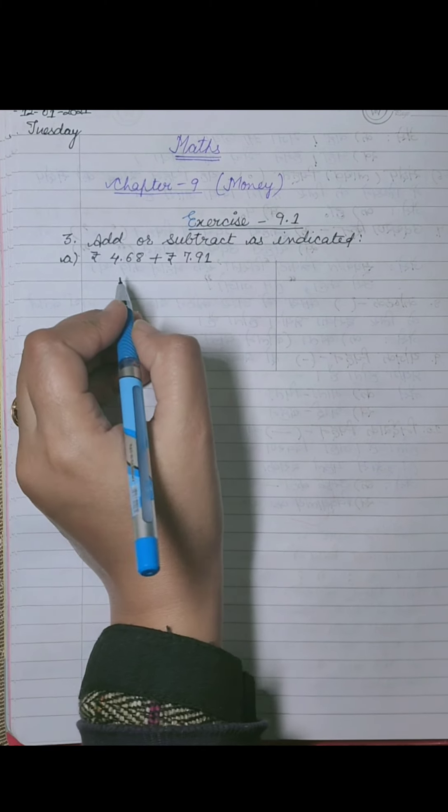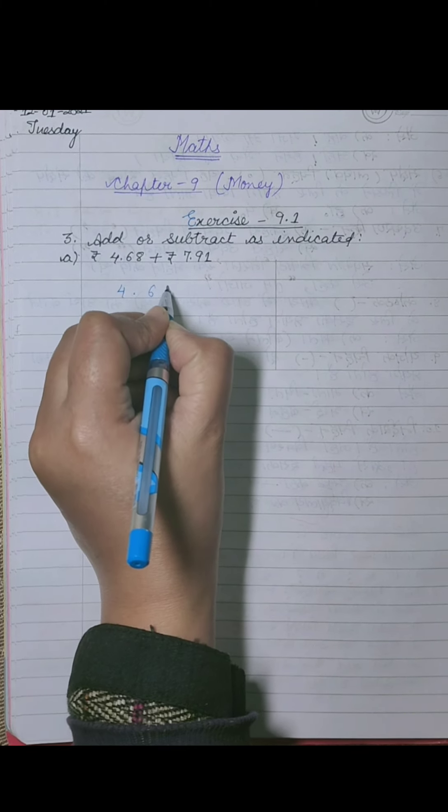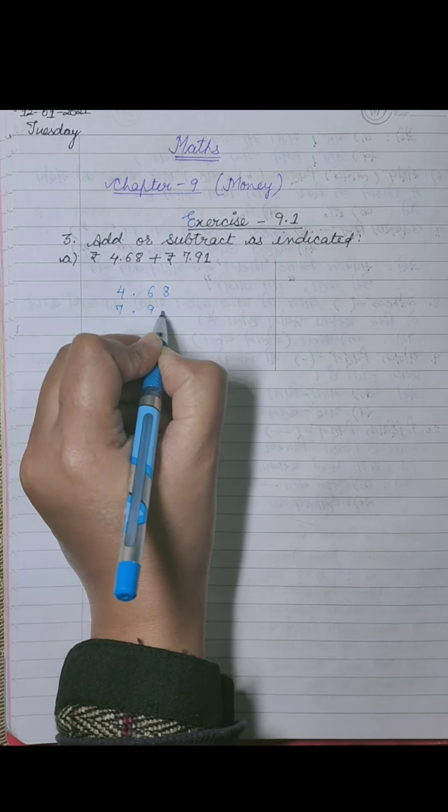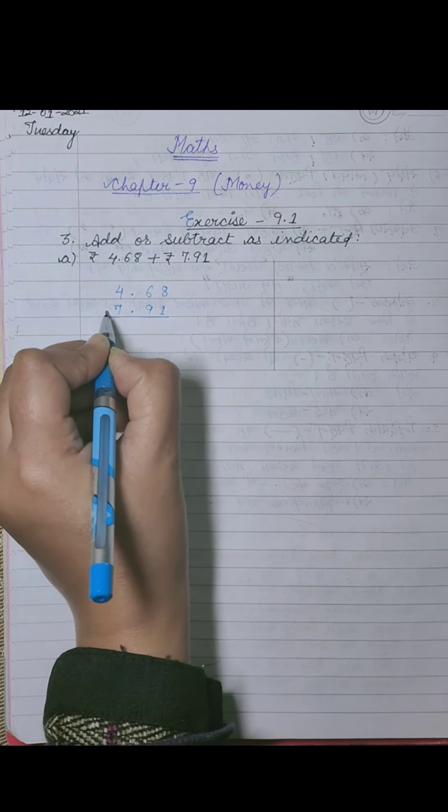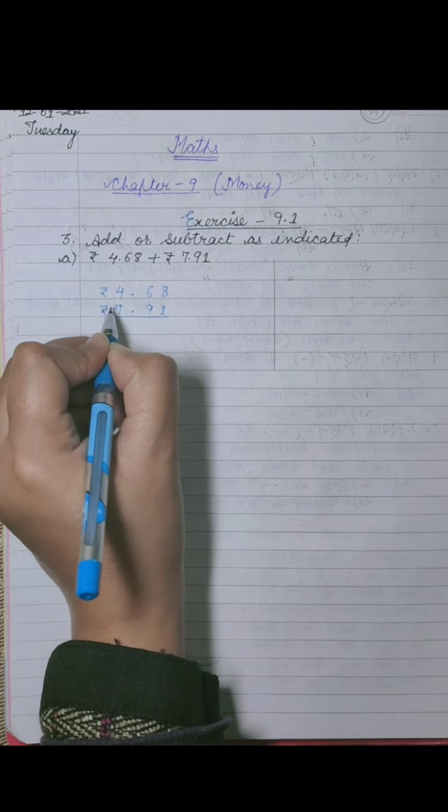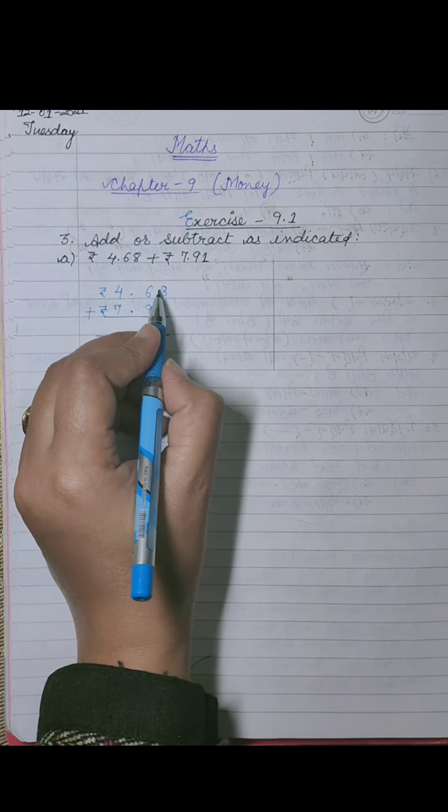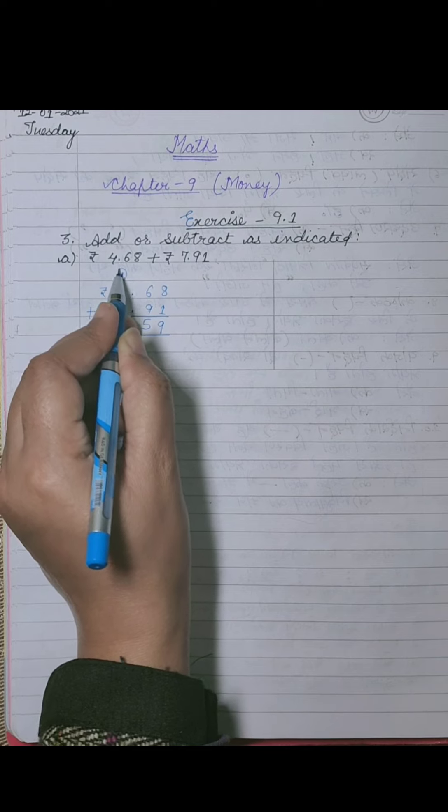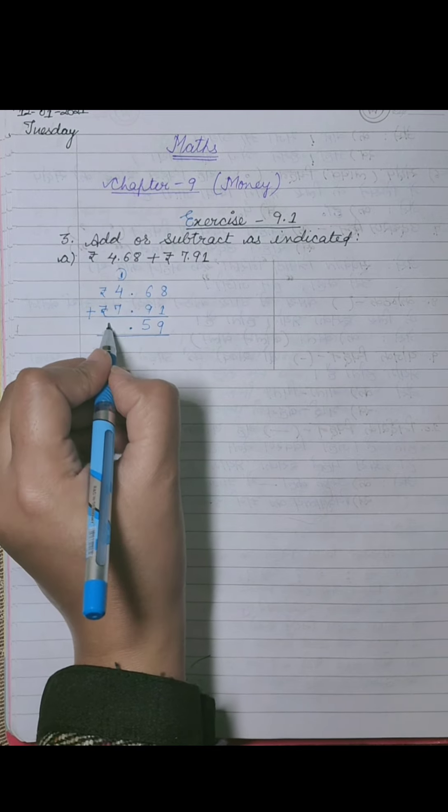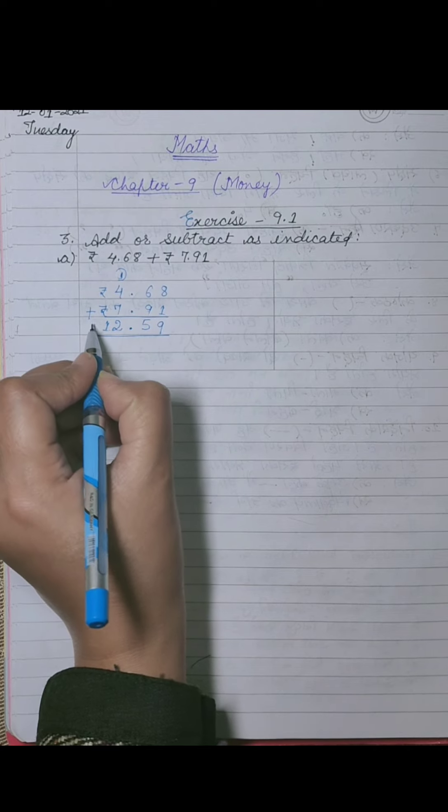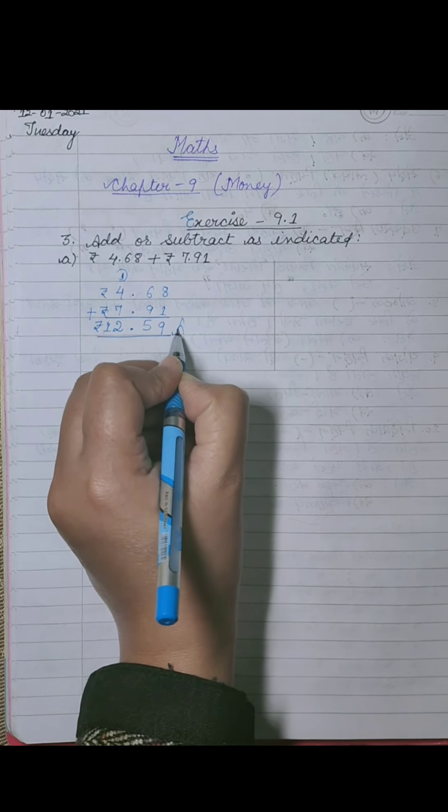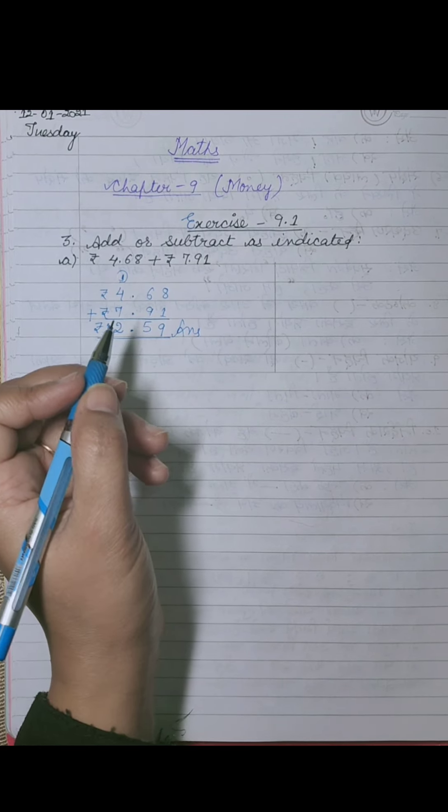Now we will write this sum as 4.68 plus 7.91 rupees. You can write rupees and paise labels above. Decimal below decimal means paise below paise, rupees below rupees. Now we will add: 8 plus 1 is 9, 6 plus 9 is 15, 1 will carry over. 7 plus 4 is 11, plus 1 is 12. So it is 12.59.